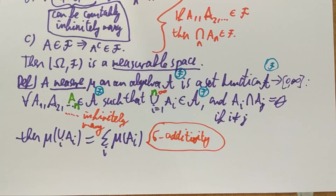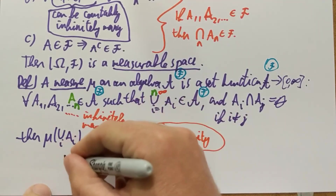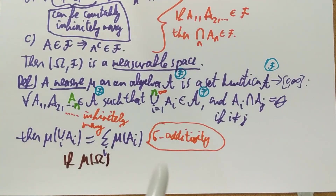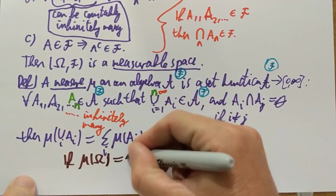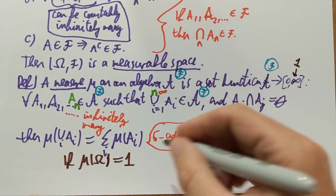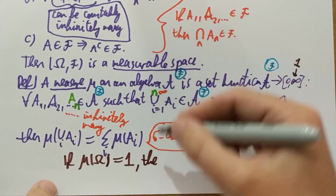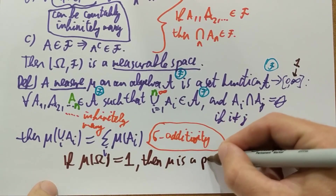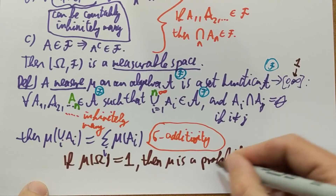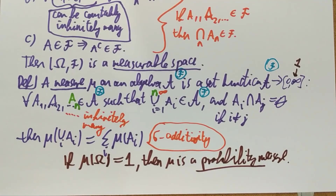If it actually maps to the interval zero to one, then it's called a probability measure. If mu of omega — which is the largest value it can take, since omega is the largest subset — equals 1, in other words if mu of omega is not infinity but just 1, and mu is a measure, then mu is a probability measure. A probability measure is a measure with total mass 1: mu of the total space equals 1. Otherwise mu is just a measure.